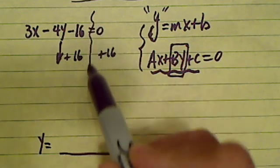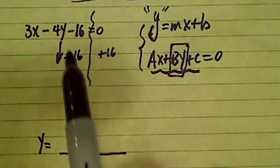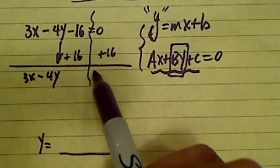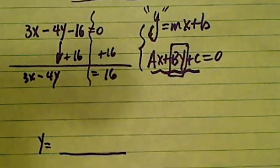This is my equal sign. This is where I break it up. Plus 16 on each side and then I end up with 3x minus 4y equals 16. I'm almost there. I moved one thing over.